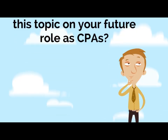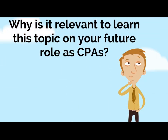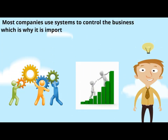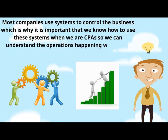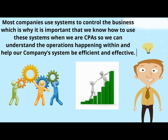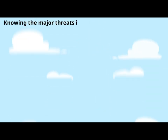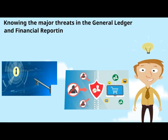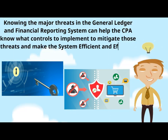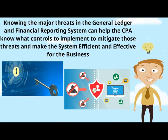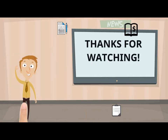Why is it relevant to learn this topic in your future role as CPAs? Most companies use systems to control the business, which is why it is important that we know how to use these systems as CPAs, so we can understand the operations happening within and help our company's system be efficient and effective. Knowing the major threats in the general ledger and financial reporting system can help the CPA know what controls to implement to mitigate those threats. Thanks for watching.